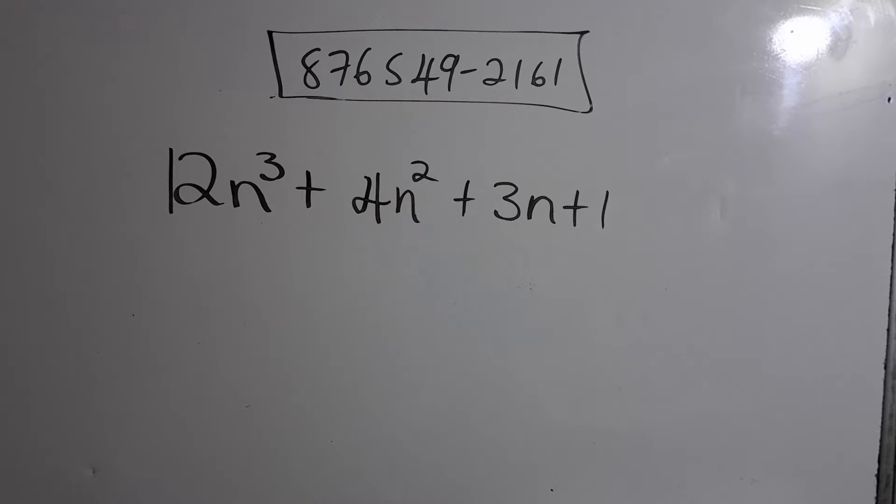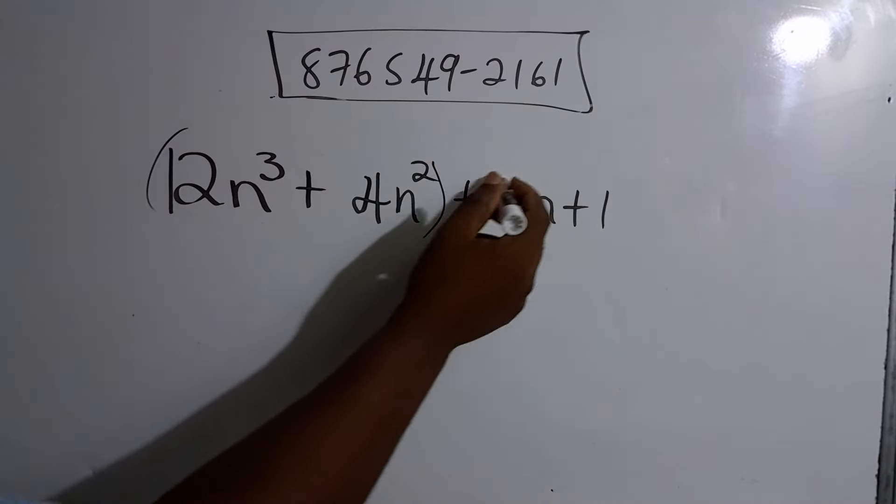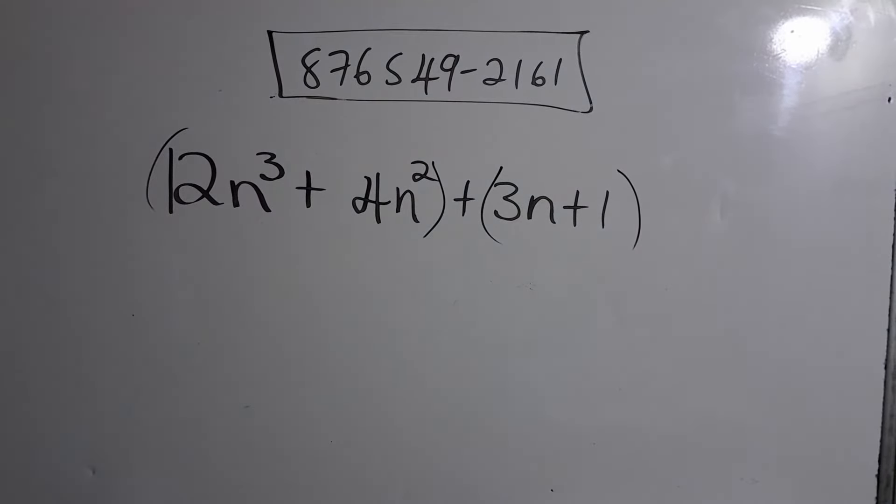All right, so we have 12n³ + 4n² + 3n + 1. So we group them in pairs and we take out the highest common factor.